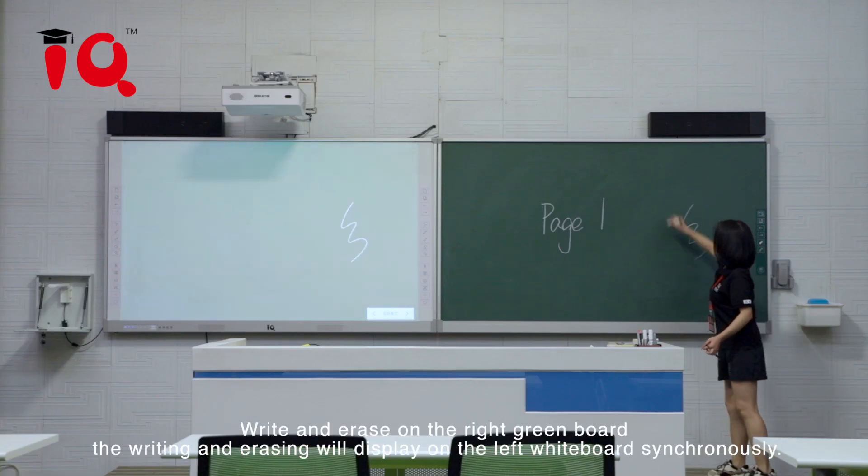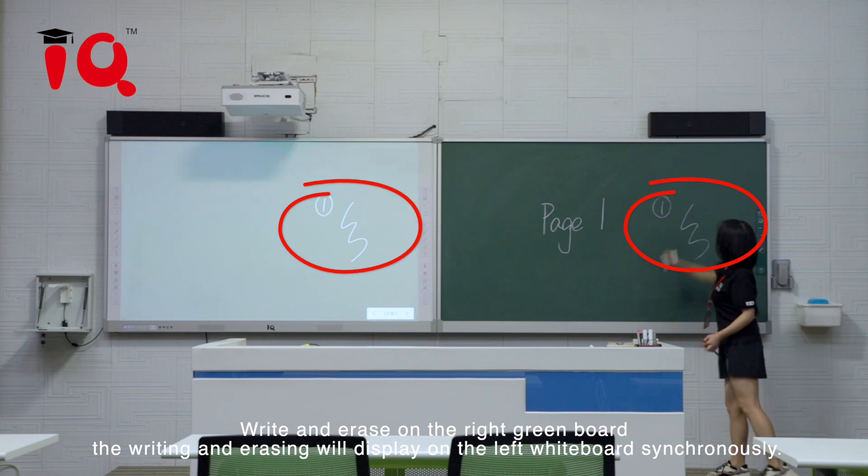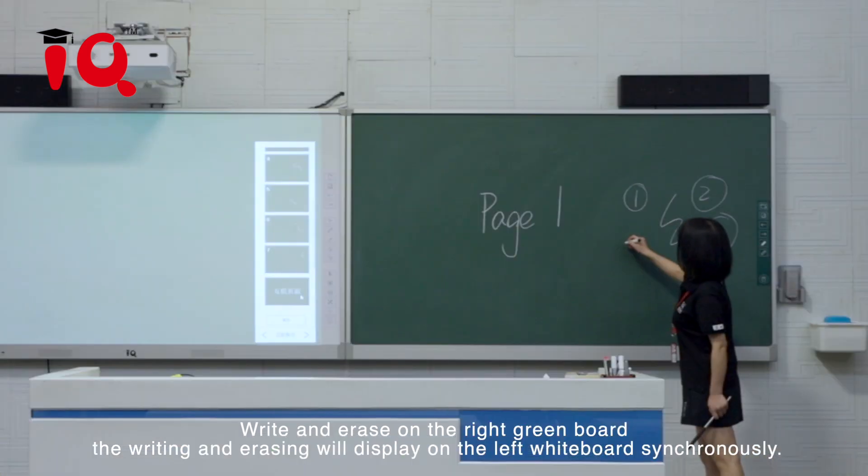Write and erase on the right greenboard. The writing and erasing will display on the left whiteboard synchronously.